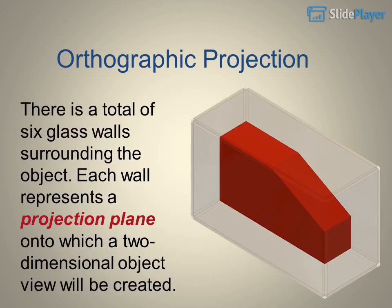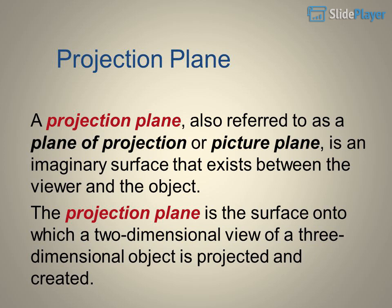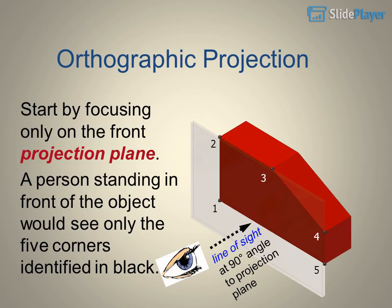The best way to understand orthographic projection is to imagine an object contained inside a glass box. There are a total of six glass walls surrounding the object, and each wall represents a projection plane onto which a two-dimensional object view will be created. A projection plane — also referred to as a plane of projection or picture plane — is an imaginary surface that exists between the viewer and the object.